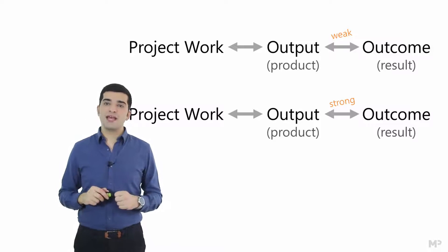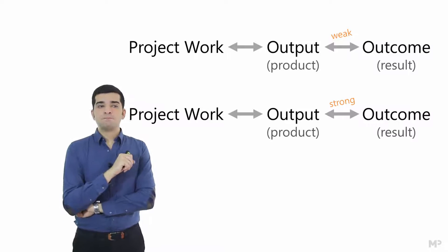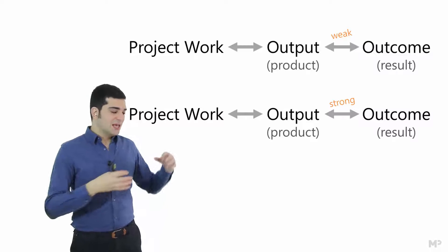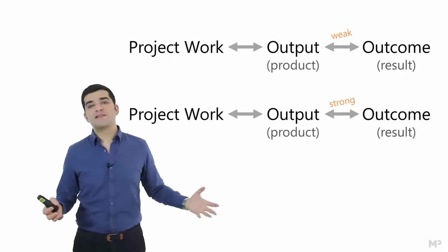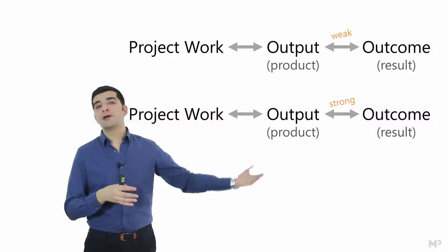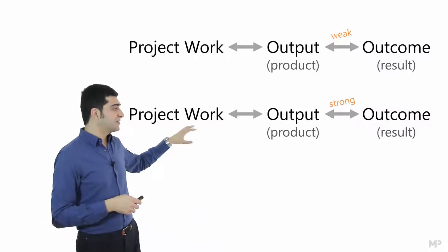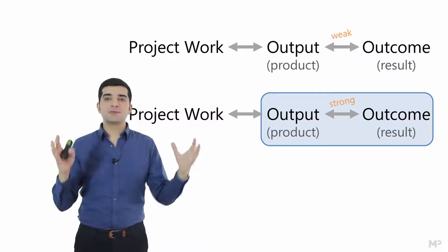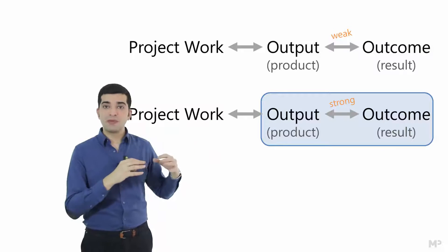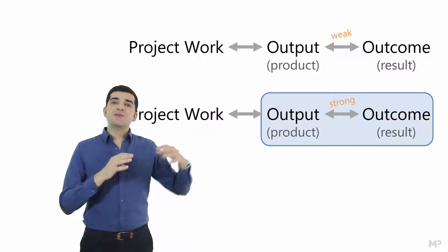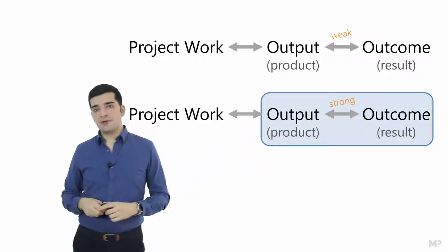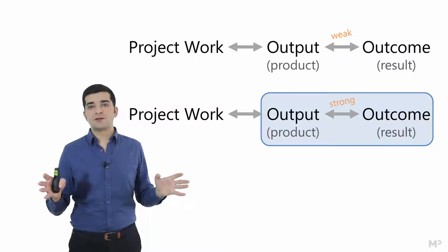Sometimes we have strong relationships between outputs and outcomes, which makes everything really simple. Think about the hospital: the relationship between the hospital and improvements in healthcare is strong. We can be sure the product creates that outcome — it's been like that for hundreds of years and will be true long after your project finishes. So we can treat them as one thing; once you choose the best product, you can focus on it and be confident that as soon as you create the product the outcomes will be generated.